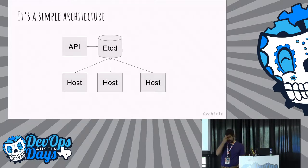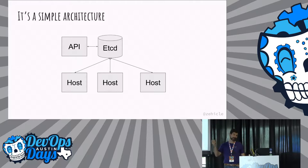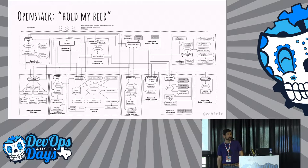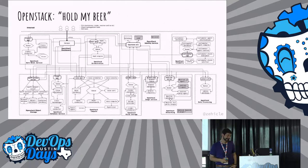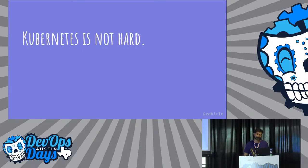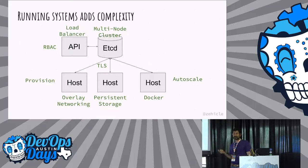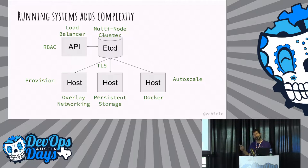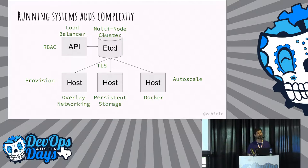So why is Kubernetes so hard? It really has a very simple architecture — it's as easy as a database. Things connect directly to the database. It has an API server. And if you think about OpenStack, OpenStack is 'hold my beer' on the architectural diagram. Kubernetes architecture isn't complex, but there's a whole bunch of things that don't even show up on those architectural charts that make things really complex: having a load balancer in front of your API server, worrying about authentication and controls, multi-node clustering, provisioning, overlay networking — all that stuff. That's really hard.